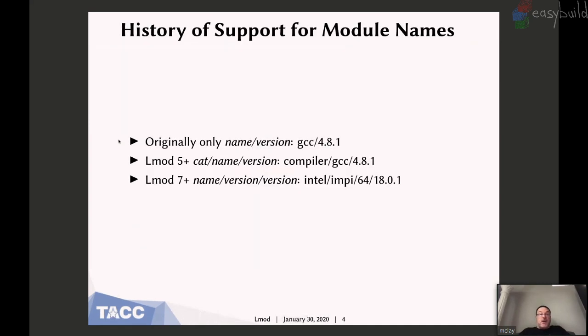A little history. When I started out, I only thought that you should need a name and a version. Lmod 5 came out and I allowed you to have a category, a name, and a version. You can have as many categories and subcategories as you like — it's only typing and nomenclature.